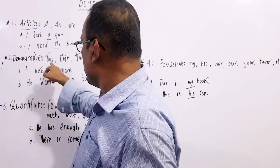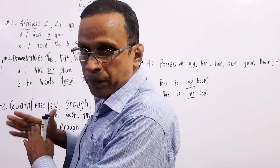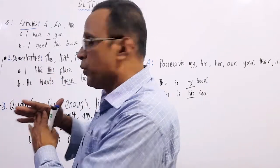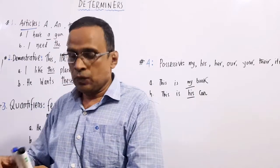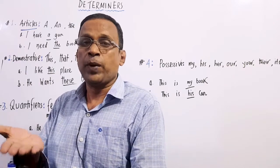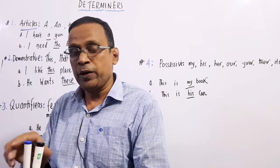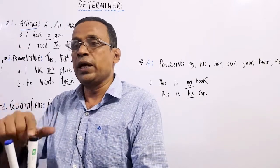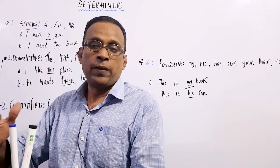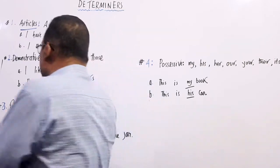This, that, these, those - we use them as a pointer of a noun. If we say, you can see I have two pens in my hand, I can say these pens are mine. This pen - I am pointing to this pen. So this, that, these, those are used as a pointer of a noun.